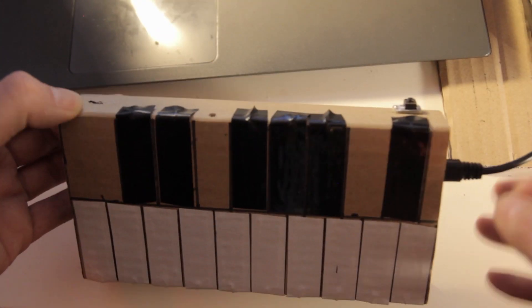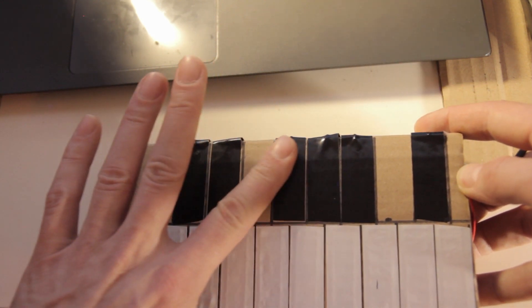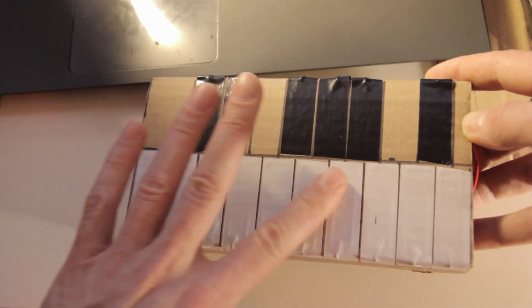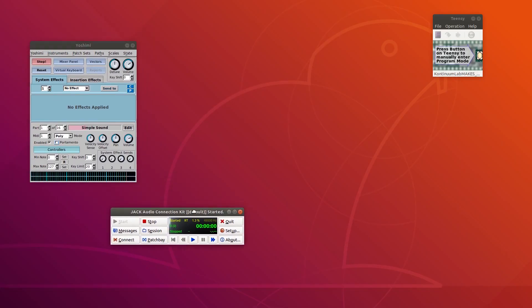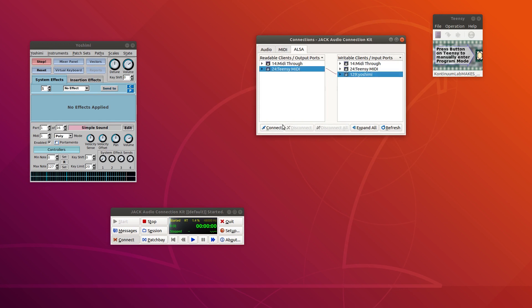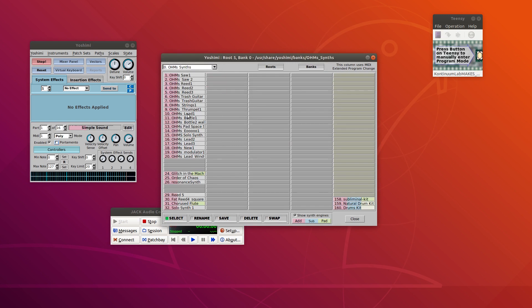Then, of course, I need to calibrate the sensors by pressing the calibration button and keeping it pressed while I activate all the other sensors one by one. Then I open up the Yoshimi Software Synthesizer and connect the keyboard and the synth through jack. And now I'm ready to play.